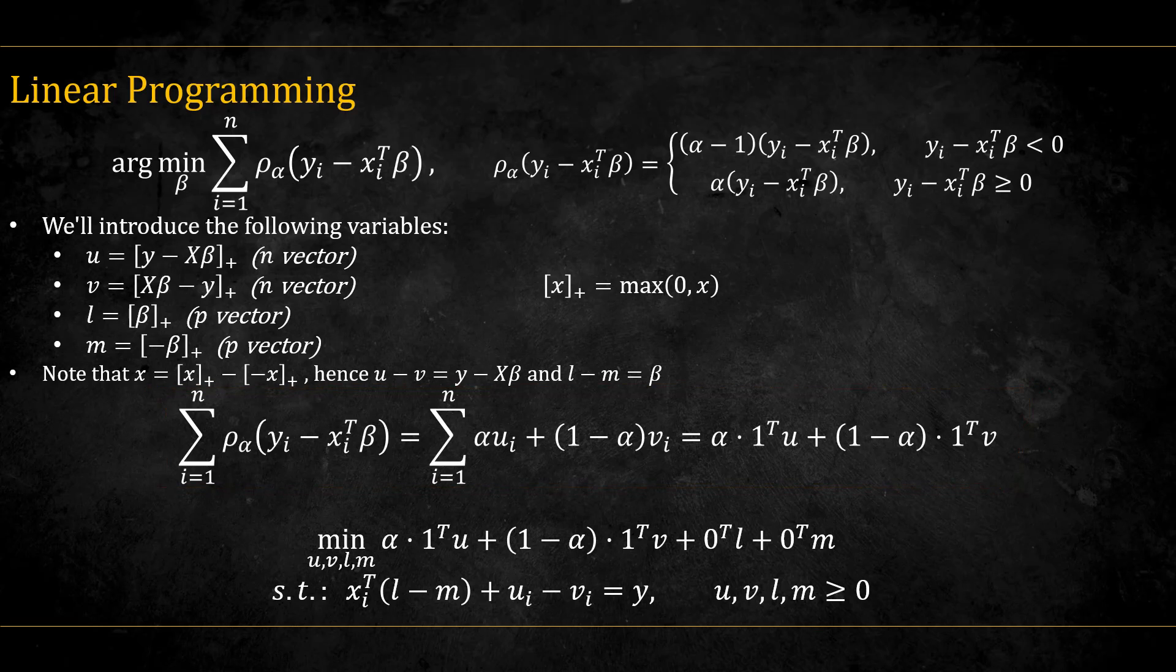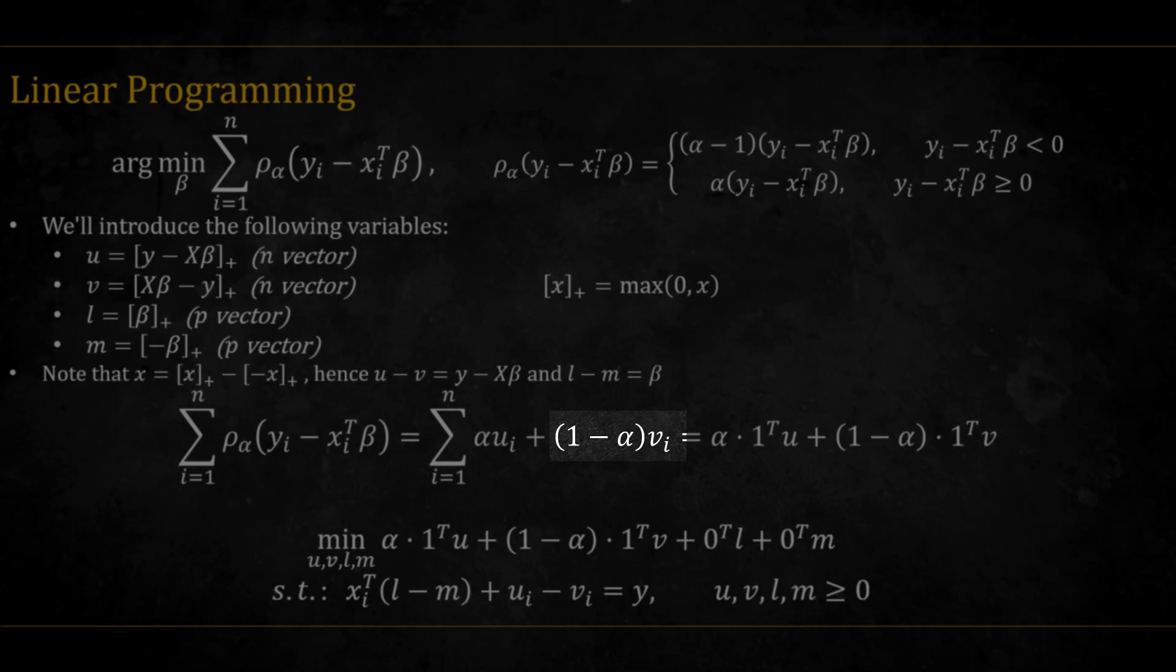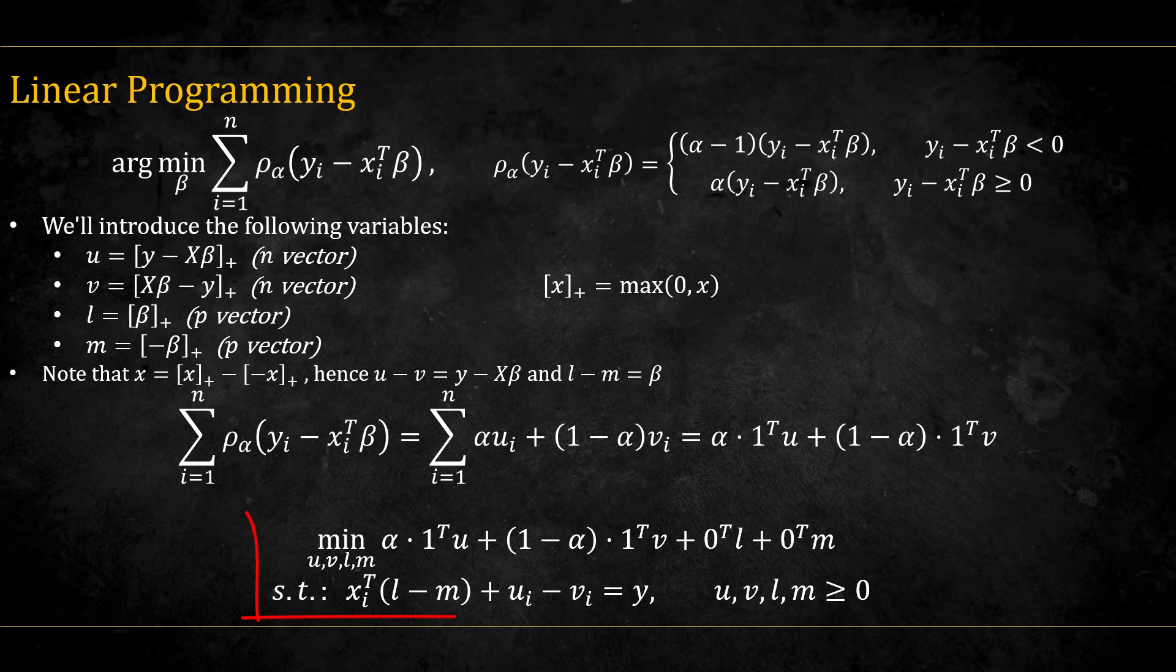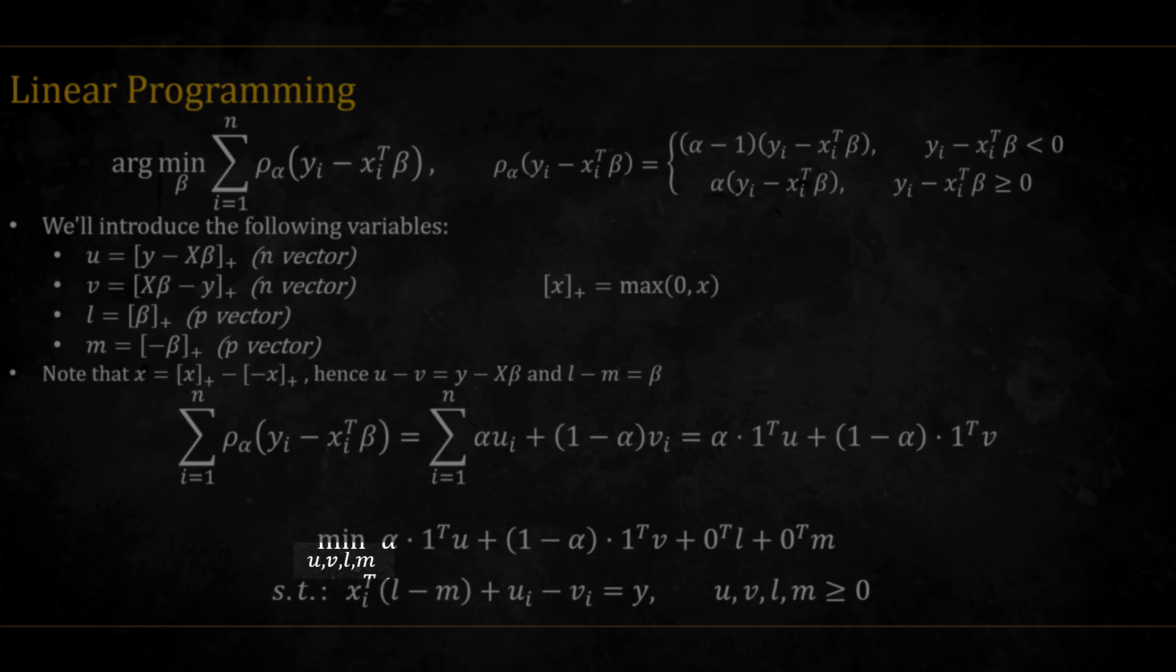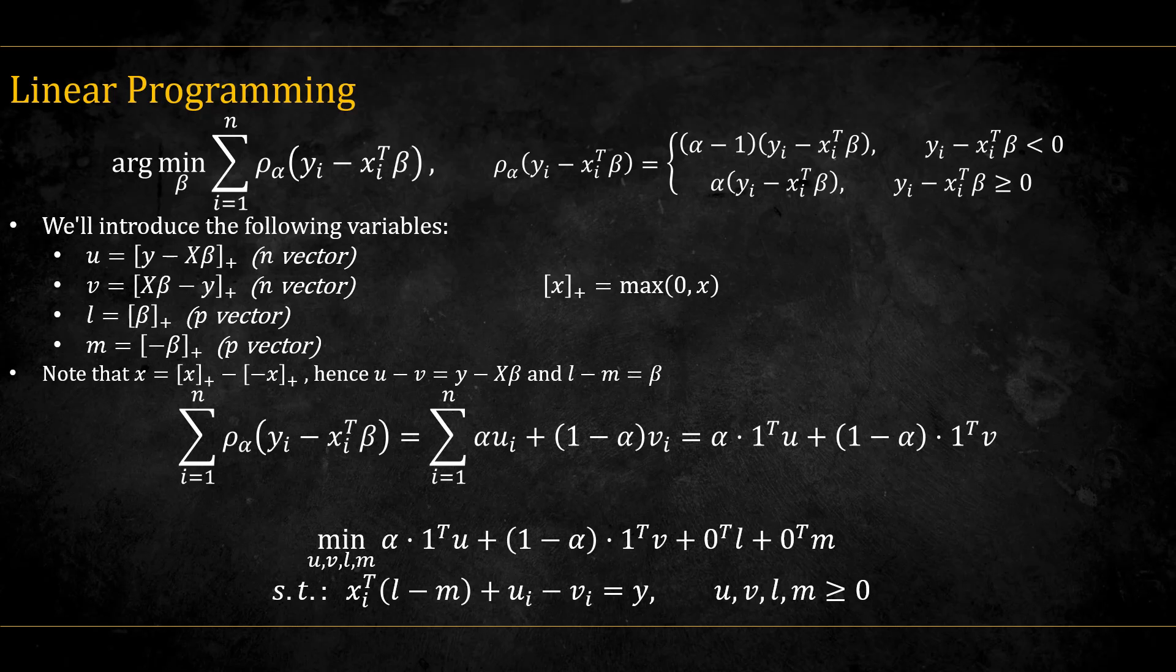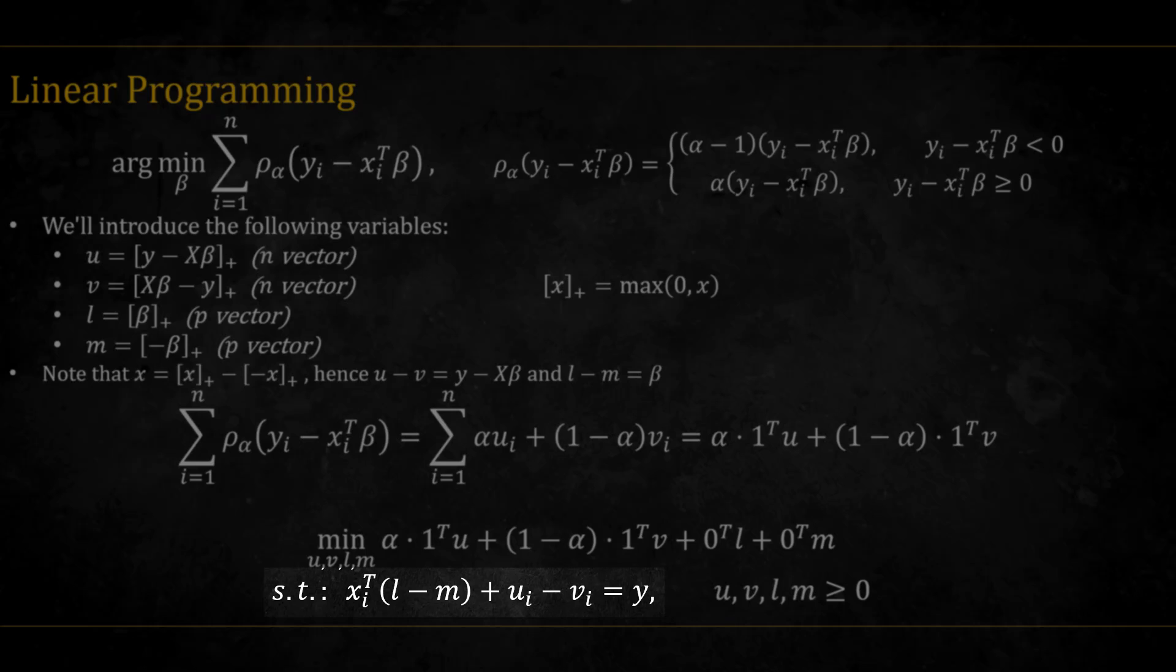Notice that since v is positive, we multiply the expression by minus one and got one minus alpha instead of alpha minus one. We get the following linear programming optimization problem. Note that now we do not optimize the beta anymore. Instead, we can play around with u, v, l, and m, and so in order to constrain them, we subject the optimization to this constraint, which makes sure that l minus m is equal to beta, and u minus v is equal to y minus x beta.